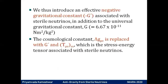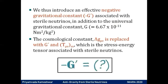In lieu of this repulsive gravity, we introduce a negative gravitational constant which we denote by minus G prime. G prime itself is greater than zero and is associated with the sterile neutrinos. The cosmological constant lambda is eliminated and G prime and T_μν^{Sν} are put in its place, T_μν^{Sν} being the stress-energy tensor associated with the sterile neutrinos. Our goal now is to constrain the value of this unknown parameter G prime.